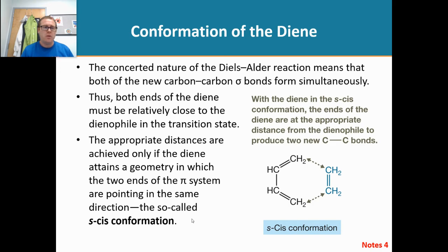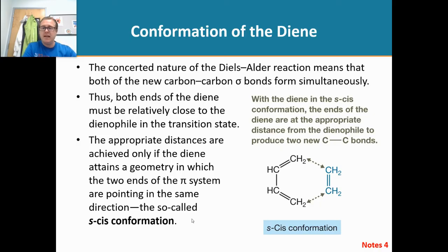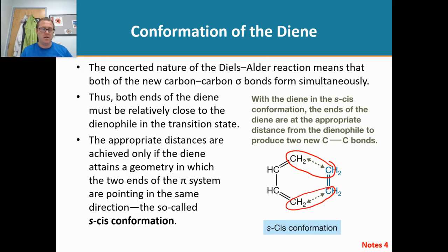In order for the Diels-Alder reaction to work, the conformation of the diene is very important. The conformation of the diene has to be in the S-cis conformation. The reason why it has to be in the S-cis conformation is because it needs to get these carbons in close proximity to one another so it can form that bond simultaneously.